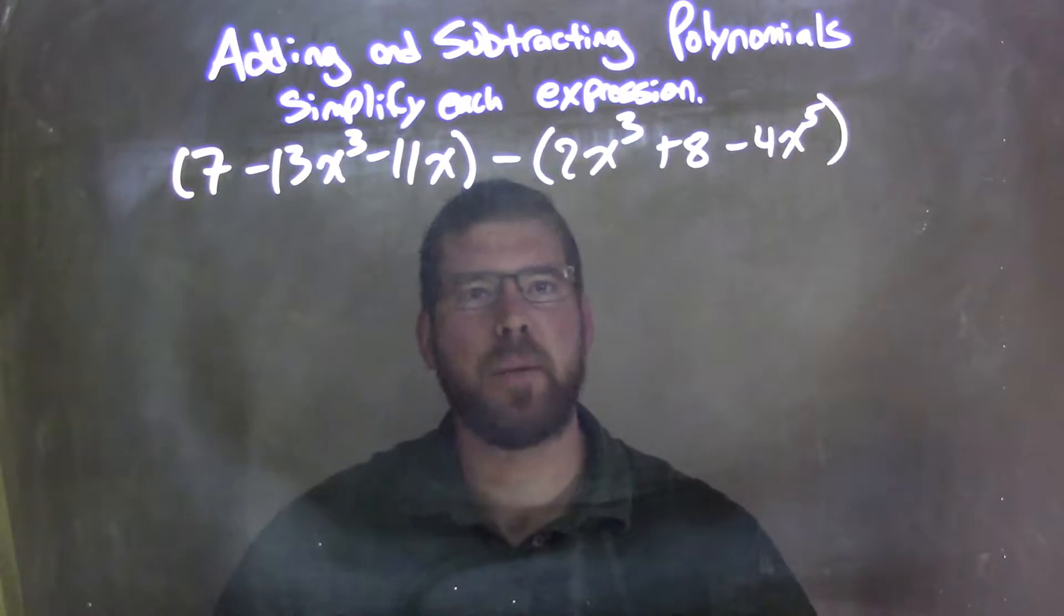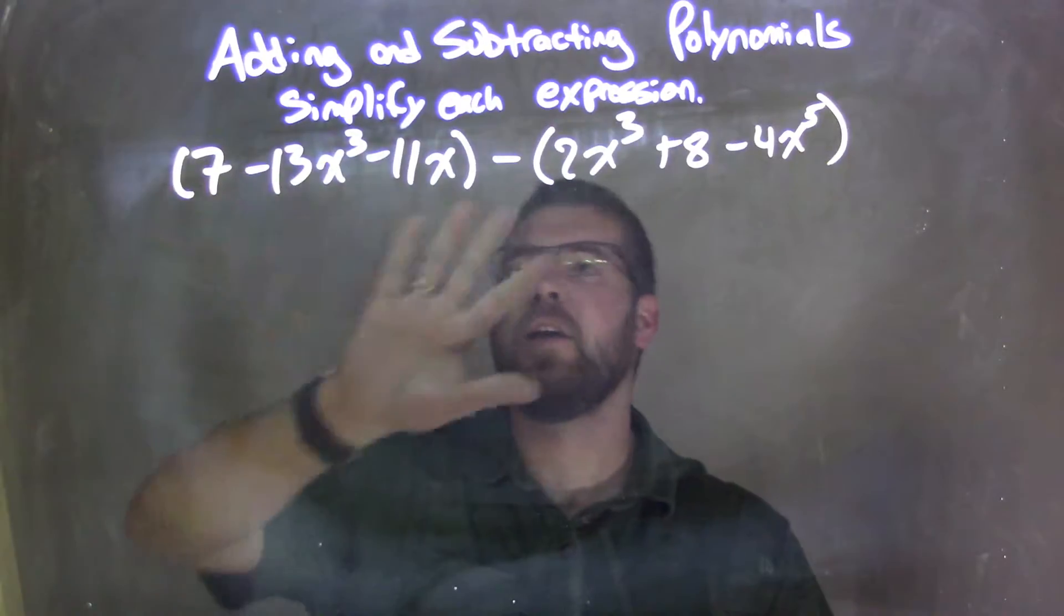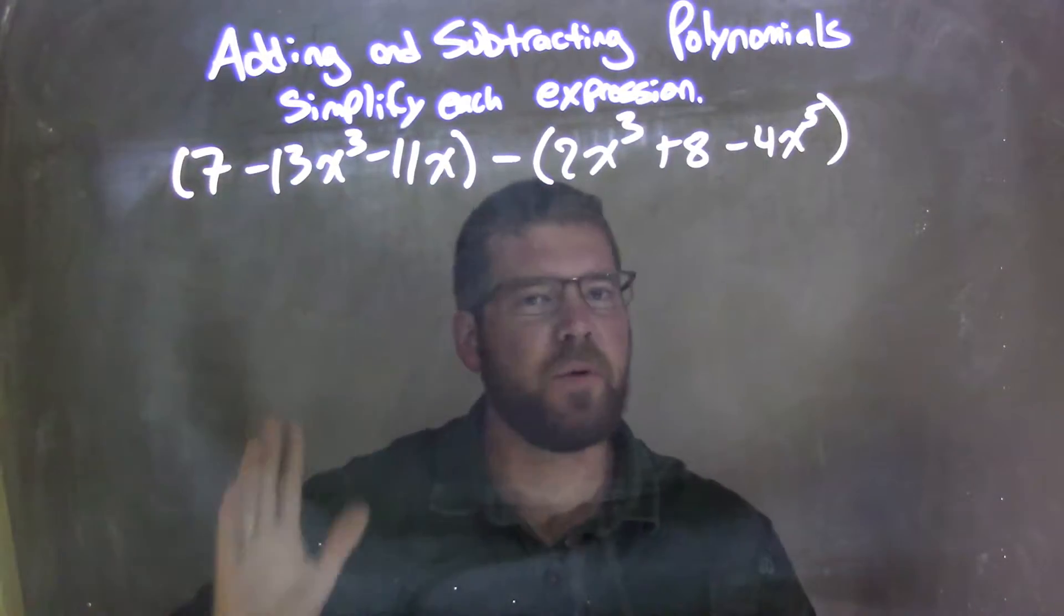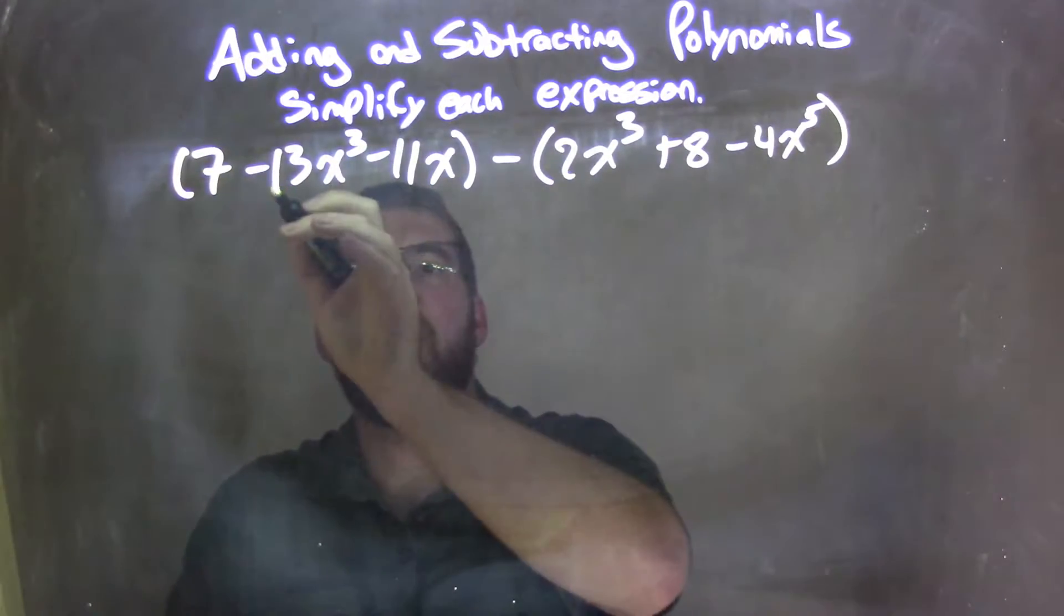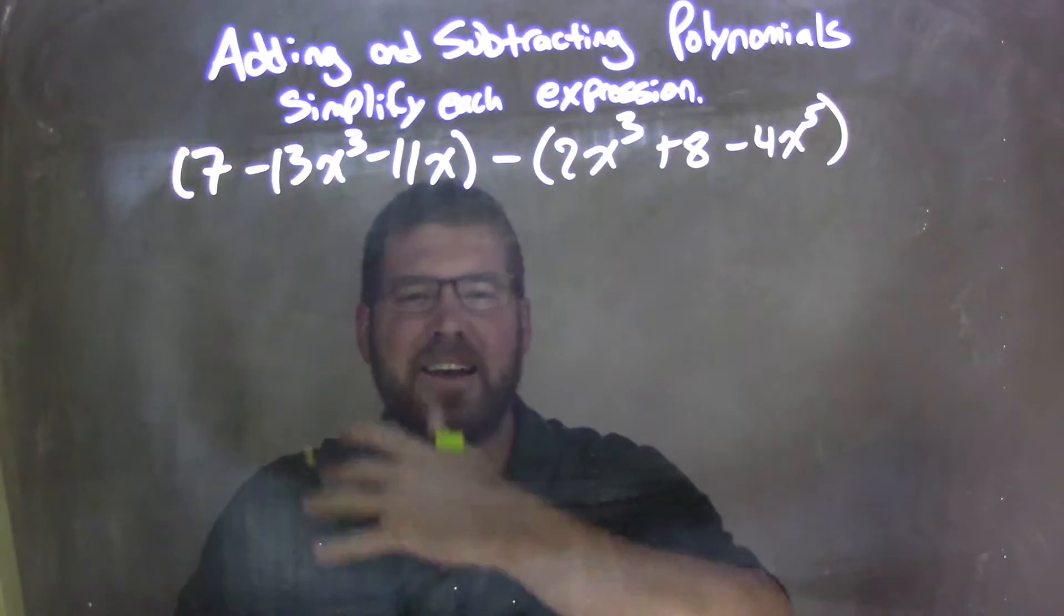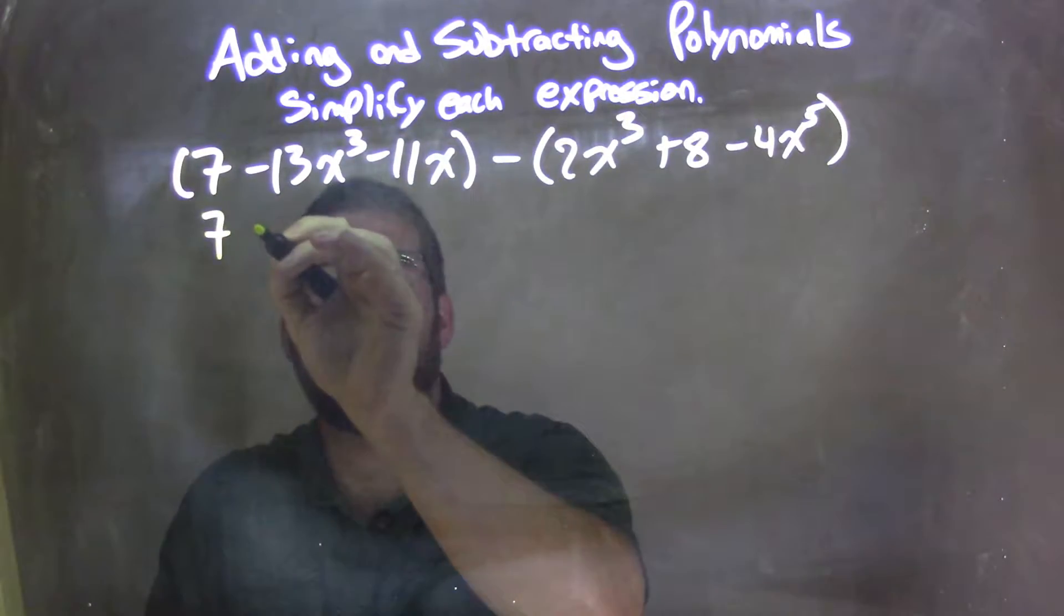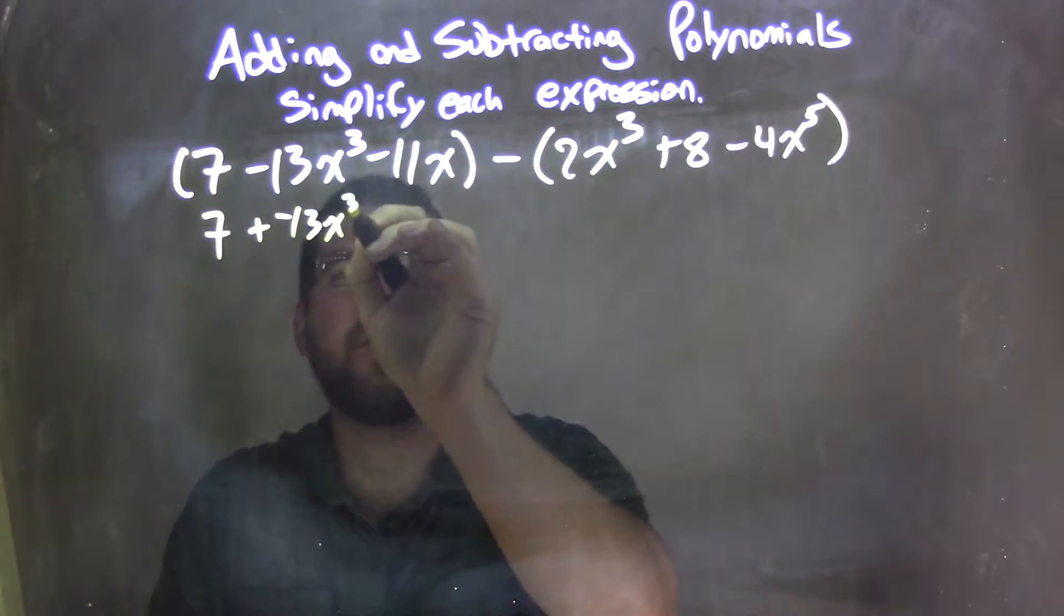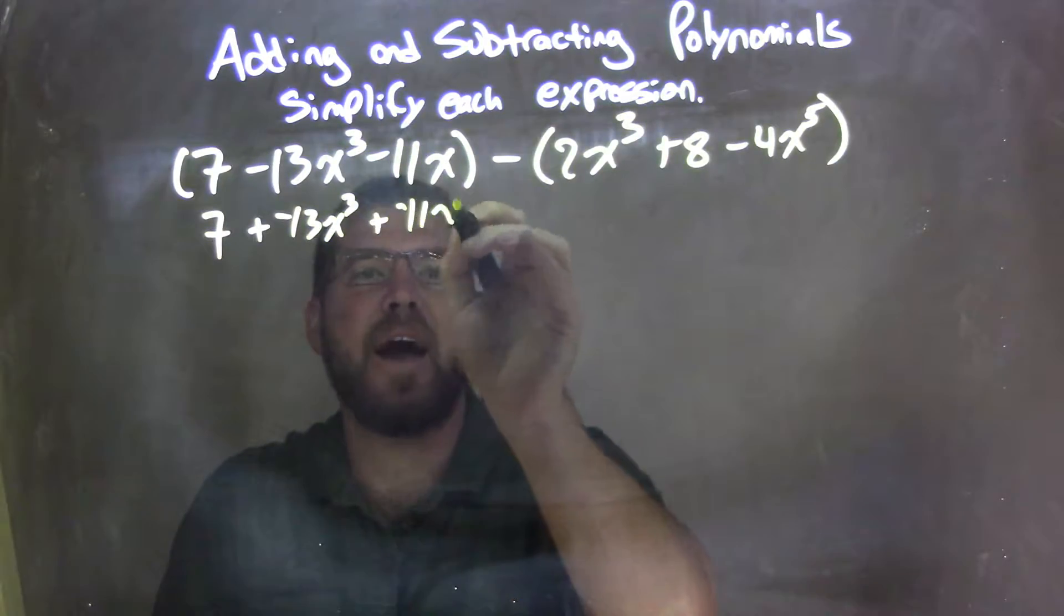Well, what I like to do, I'm going to do two steps at once. I notice that both the parentheses we can't simplify within the parentheses, but I'm going to make all of my subtractions be adding a negative. So I'm going to write 7 plus a negative 13x to the 3rd plus a negative 11x.